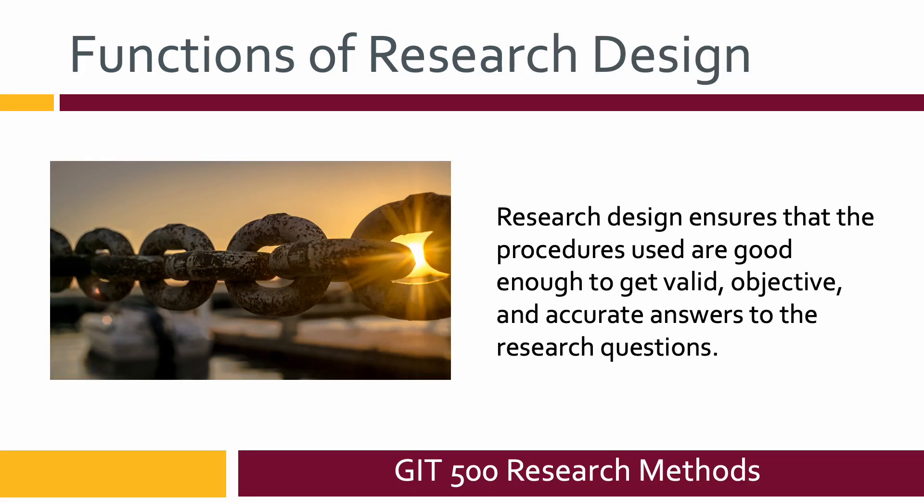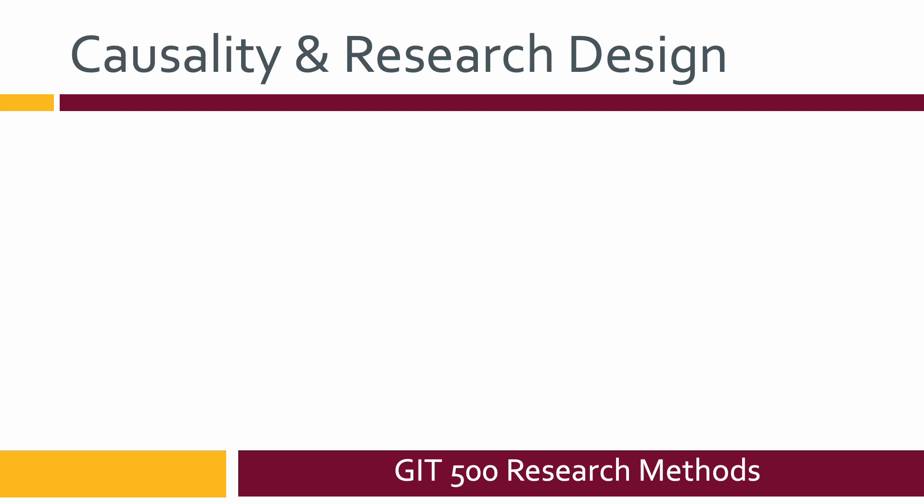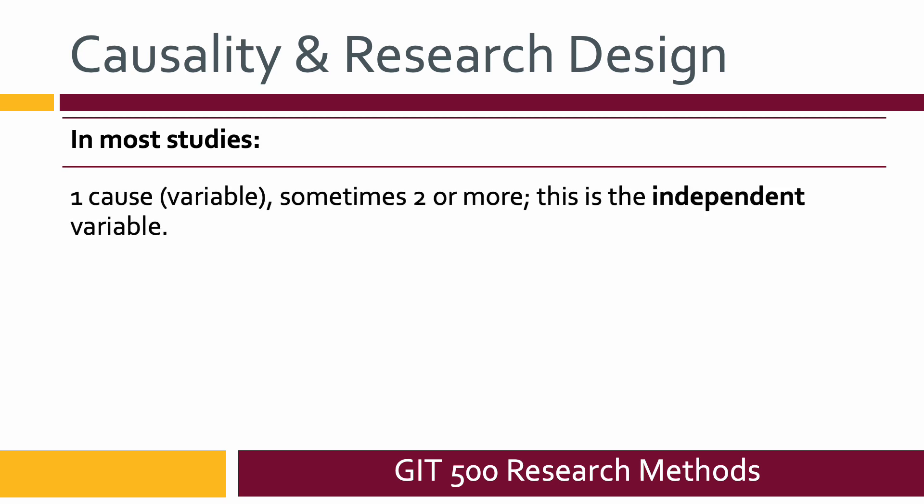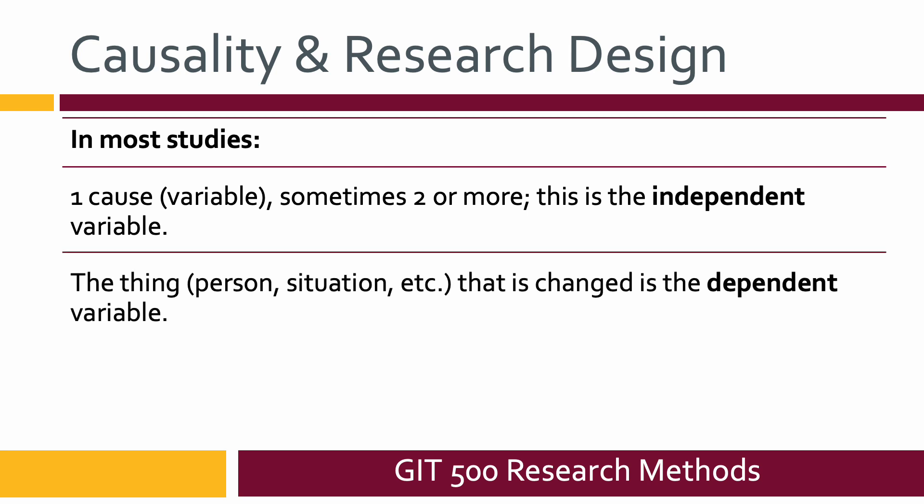The functions of research design are this: that research design ensures that the procedures that are used are good enough to get valid, objective, and accurate answers to the research questions. We've already talked about cause and effect. Most research is a causality situation. They are cause and effects. Most studies have at least one cause, maybe multiple. It gets more complicated if you do that. You can't directly decide if something is affecting something else if you have a lot of independent variables. This is our independent variable. Remember, that's the thing that isn't going to change. You can have multiple variables, but each of those independent variables does not change through the research. The thing that does change is the dependent variable, which is the person, the situation, or whatever that you're studying.